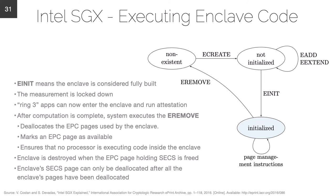The next two instructions are EINIT and EREMOVE. EINIT initializes the enclave — the measurement is locked down and user applications can now enter, execute code inside the enclave, run attestation, and perform all userland interactions. Once the userland application is finished and the enclave is no longer needed, the system calls EREMOVE, which deallocates the enclave page cache pages, marks the cache as available, and ensures no processor is executing code inside the enclave. The enclave page cache holds all enclave metadata and is only fully deallocated once all pages have been removed.